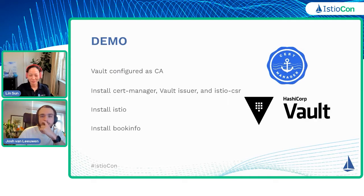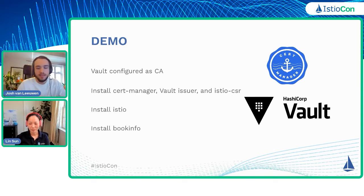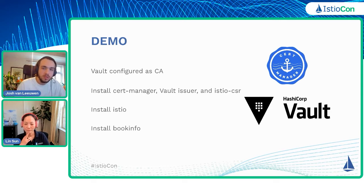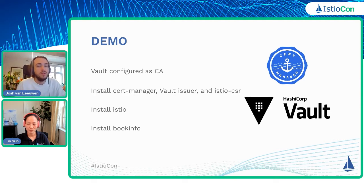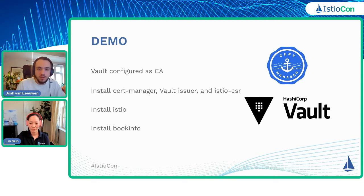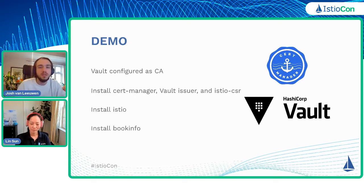Next is a demo of Istio CSR in action. The plan is: I have a cluster with Vault pre-configured with a certificate authority and an intermediate certificate authority to sign against. We'll install cert-manager along with a Vault issuer — basically configuration telling cert-manager how to get certificates signed through Vault. Then we'll install Istio CSR configured to use that Vault issuer. Finally, we'll install Istio configured to use Istio CSR, then deploy the Bookinfo demo application to prove that Istio workloads are being signed through Vault.